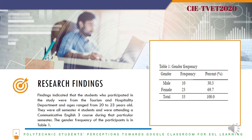Research findings. The findings indicated that the students who participated in the study were from the Tourism and Hospitality Department and ages range from 20 to 23 years old. They were all semester 4 students attending a Communicating English 3 course during that particular semester. The gender frequency of the participants is shown in Table 1: Male 10 students, 30.3%; Female 23 students, 69.7%, bringing the total to 33 students, 100%.